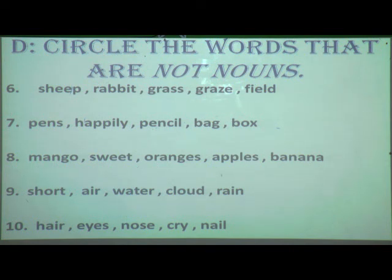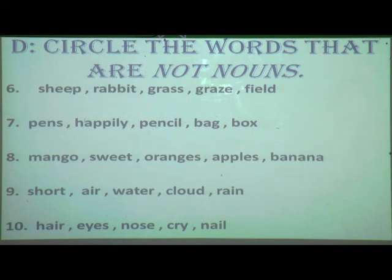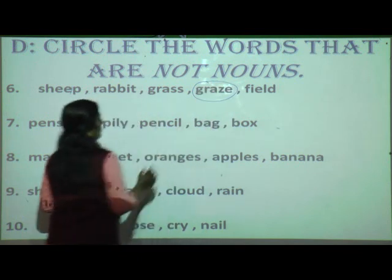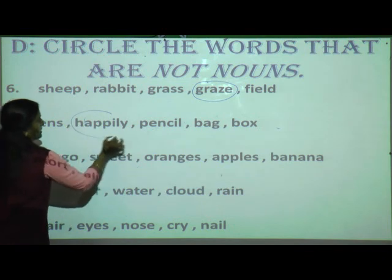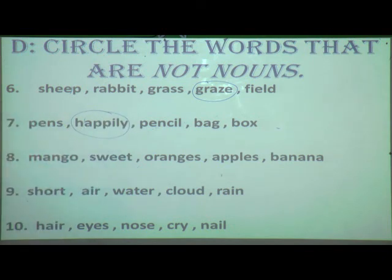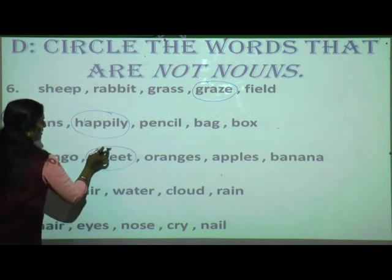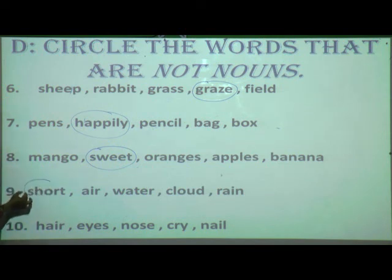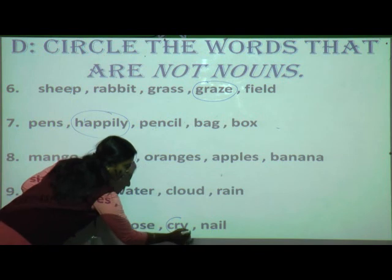Ninth group: short, air, water, cloud, rain — short is also an adjective, not a noun. Tenth group: hair, eyes, nose, cry, nail — cry is an action word, it is a verb. If you have done it wrong, erase and correct it.